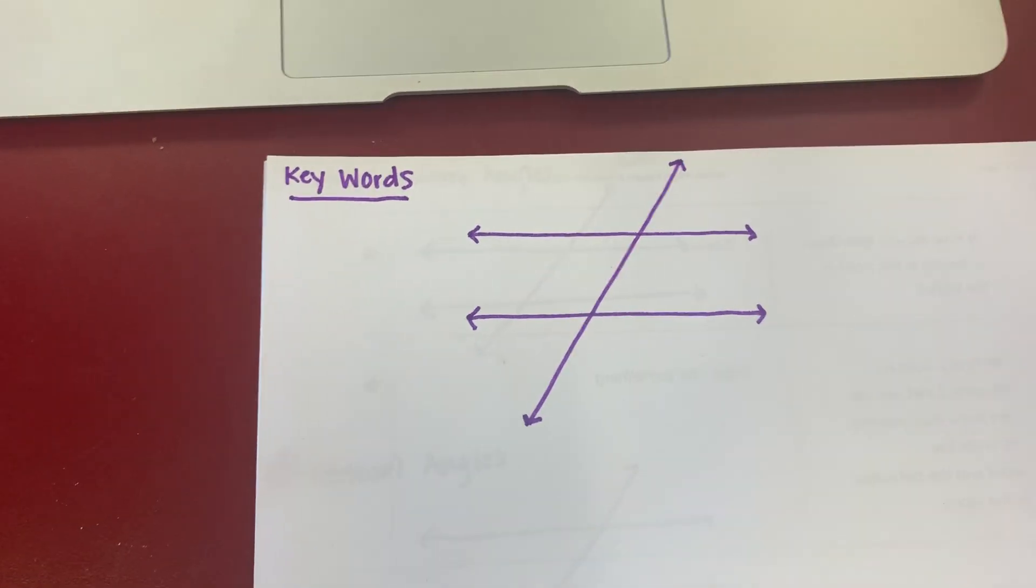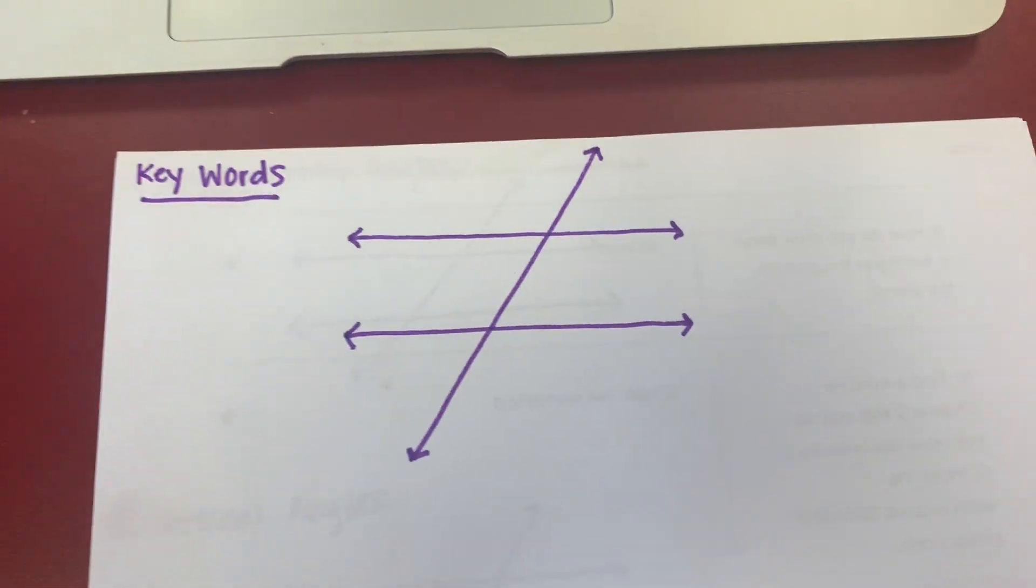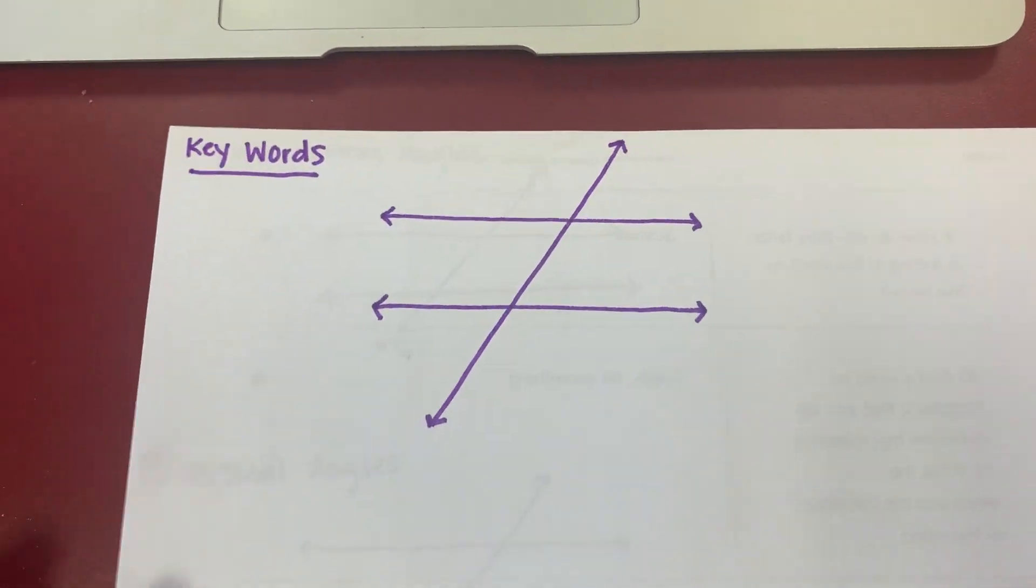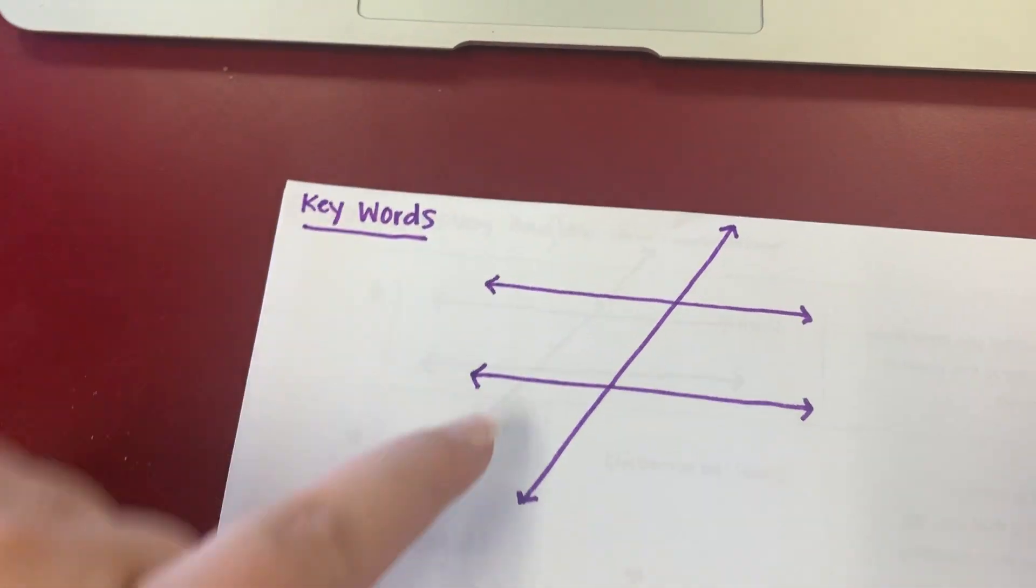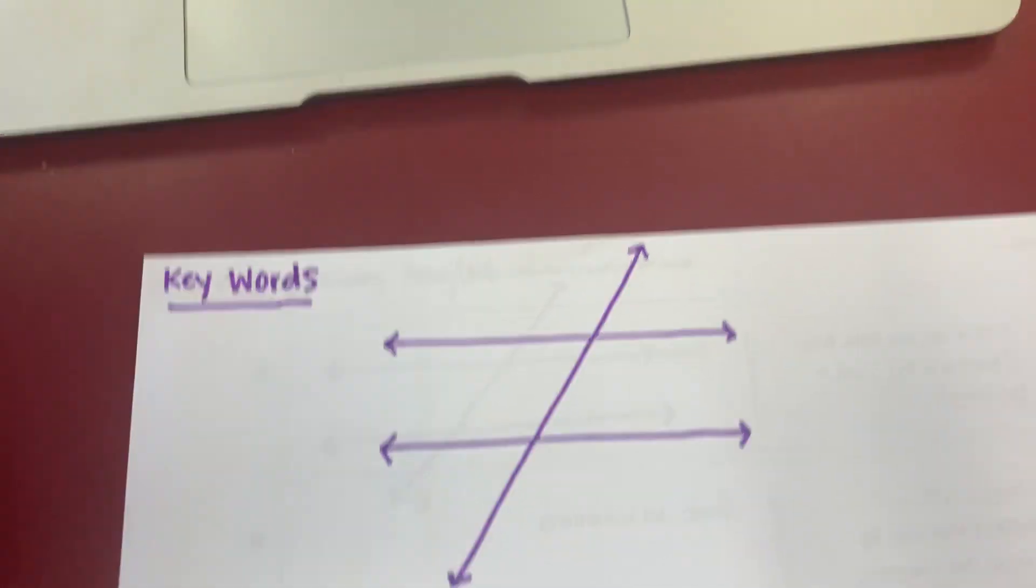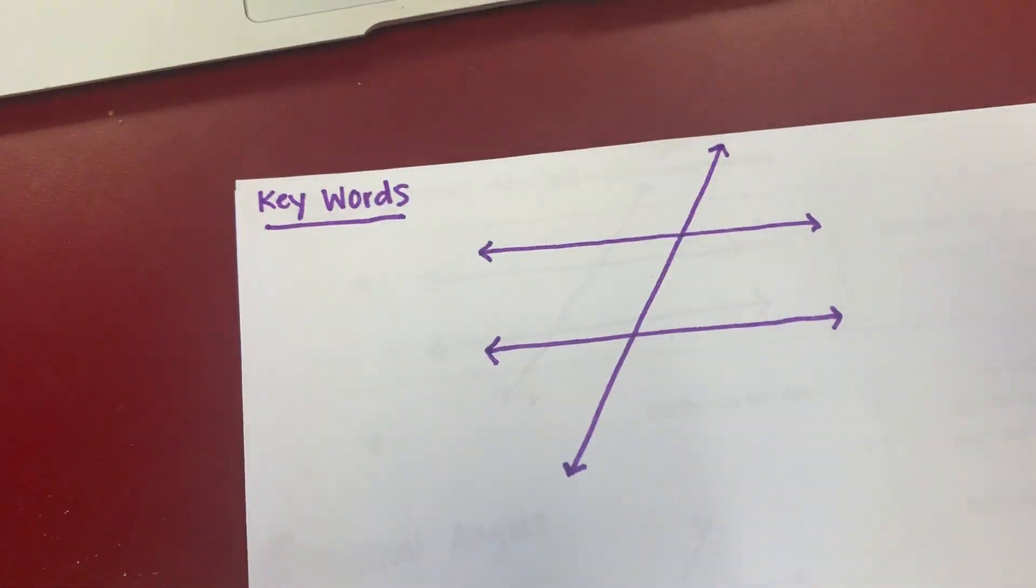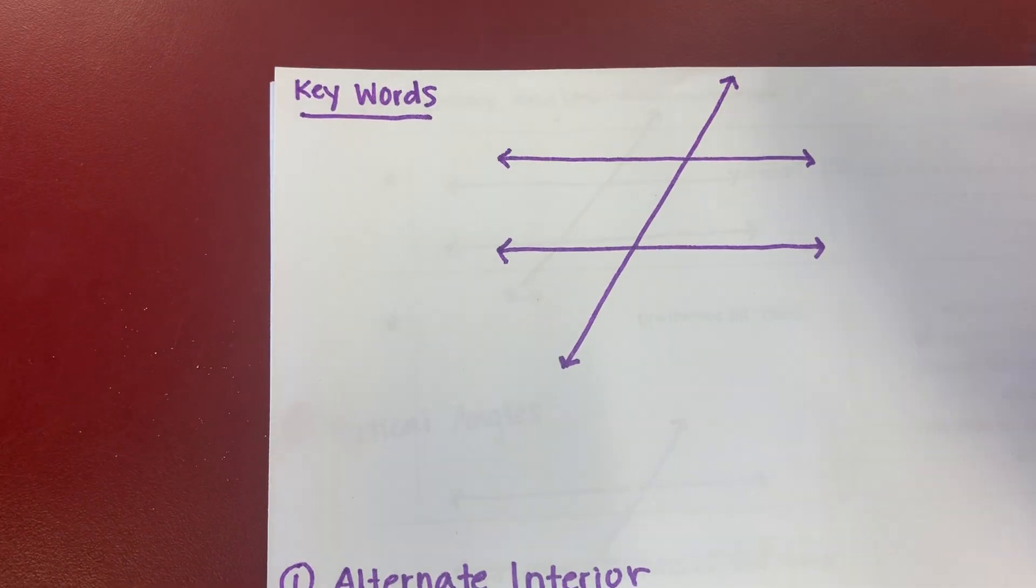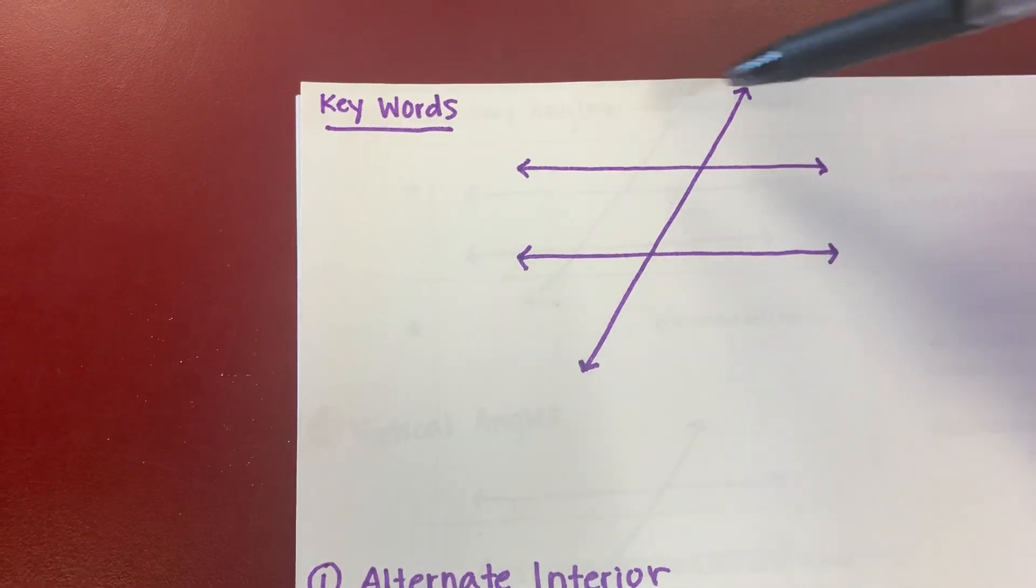Hello, my eighth grade lovelies. Let's go through, and I know some of you are having some trouble with the parallel lines cut by transversal with the angles. So I'm going to go through the angles and just explain what things mean. First, I want to go through the keywords that we're going to have here.